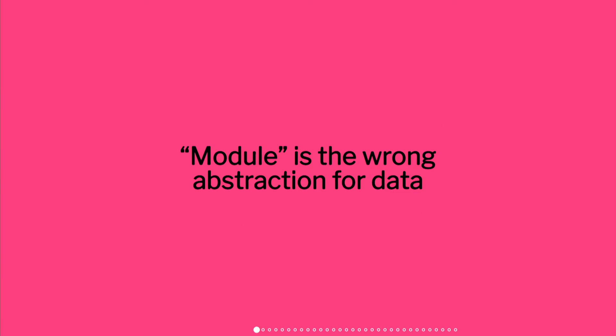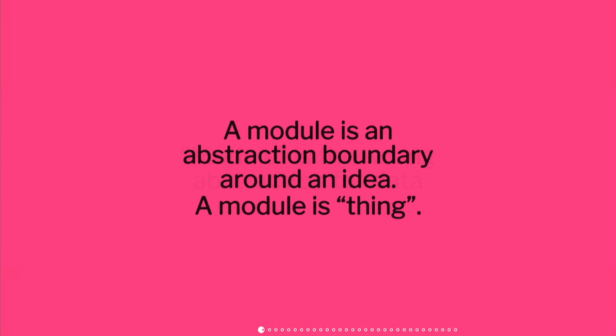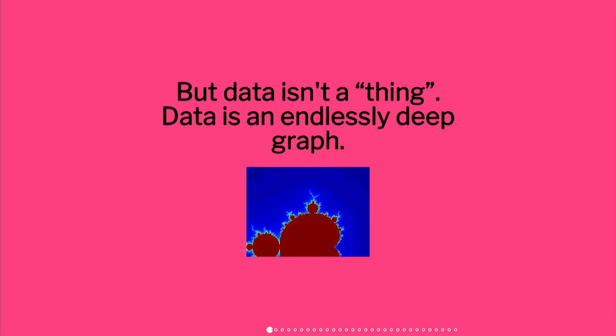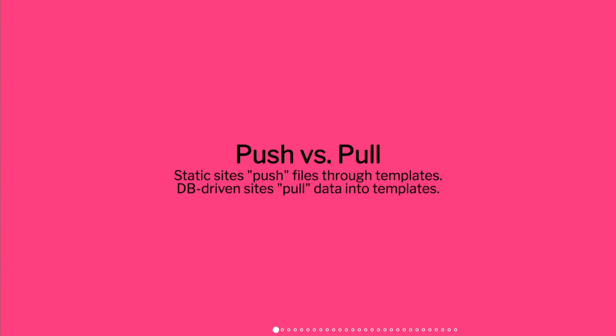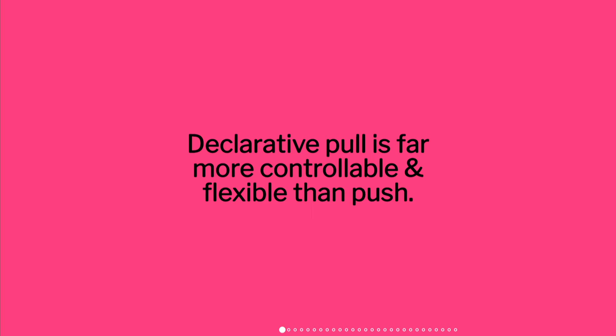I finally decided I have the wrong abstraction here, but wasn't really sure what to do. I started thinking about static sites versus database-driven sites. Static sites generally work where you have a file and it gets pushed through a template and becomes an HTML file. A database-driven site on the other hand — here's all your data, and in your templates you pull out the data you want into each page, so you have a lot more flexibility. Pulling data into pages is a lot more powerful and flexible than pushing data through templates. So I wanted to switch paradigms somehow, but the question was how.